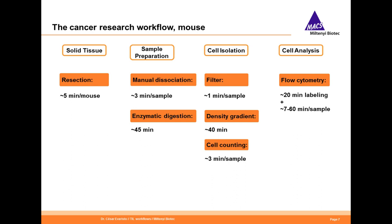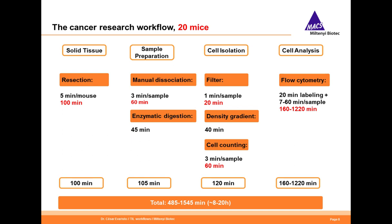And even before getting to those cells, the mouse has to be sacrificed and the tumor resected. The tumor then has to be manually dissociated, followed by enzymatic digestion. The resulting suspension then needs to be filtered, and often a density gradient and centrifugation is applied to exclude debris, dead cells, and tumor cells. The number of cells in the resulting suspension is counted, the cells are labeled with fluorescent antibodies and dyes, and are then ready for the long acquisition times on the flow cytometer. I estimated the approximate time required for each of these steps from my own experience. However, the gross majority of experiments are done using multiple mice. If we have an experiment with 20 mice, these times add up, and we can end up with a workflow that requires up to 20 hours to complete, which is far from ideal.